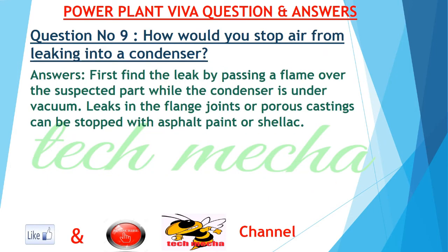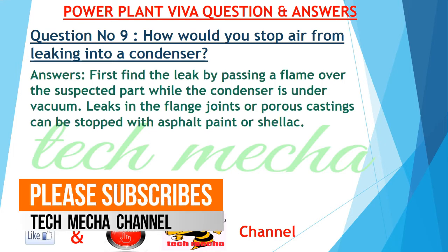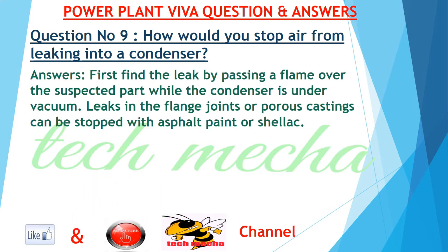Question number 9: How would you stop air from leaking into a condenser? Answer: First, find the leak by passing a flame over the suspected part while the condenser is under vacuum. Leaks in the flange joints or porous castings can be stopped with asphalt paint or shellac.